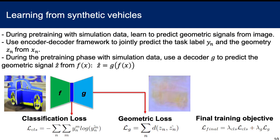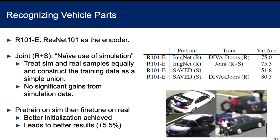We also present a simple yet effective approach to train using simulation data. The idea is to use the available 3D geometry signals that we can extract from the simulator during the pre-training phase. We use an encoder-decoder framework to jointly predict task labels and geometry of the scene. We evaluate on a task to predict attributes of vehicle parts such as opened or closed doors.